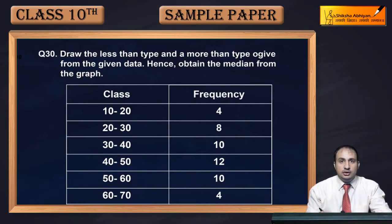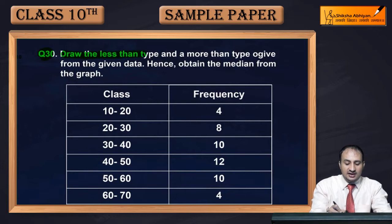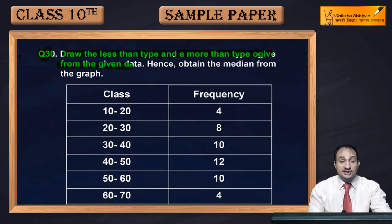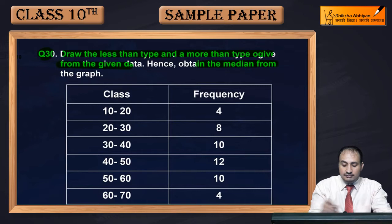Now see the last question of this paper, question 30. The question is: draw less than type and more than type ogives from the given data. Given data is class and frequency, use less than or more than ogives, and hence obtain the median from the graph.